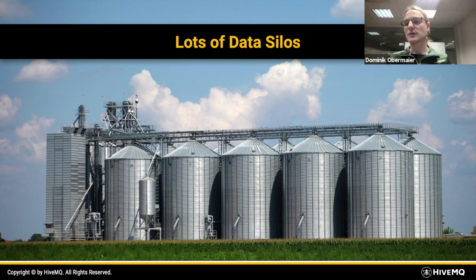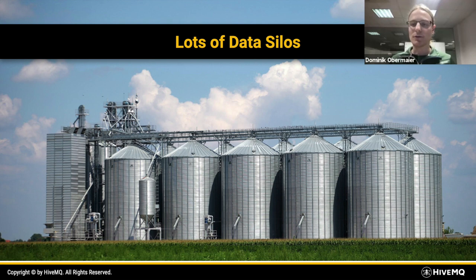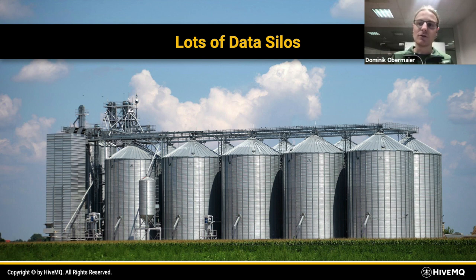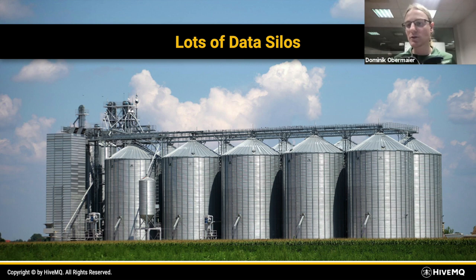Today's topic is Sparkplug, but first let's consider the current state of operations technology and information technology. A key struggle many companies face today is data silos — a lot of companies struggle with proprietary software or protocols that are very hard to connect together. The information on your factory floor needs to reach other systems and the cloud, so a key challenge is how to move data and break up these silos while remaining secure and as efficient as possible.